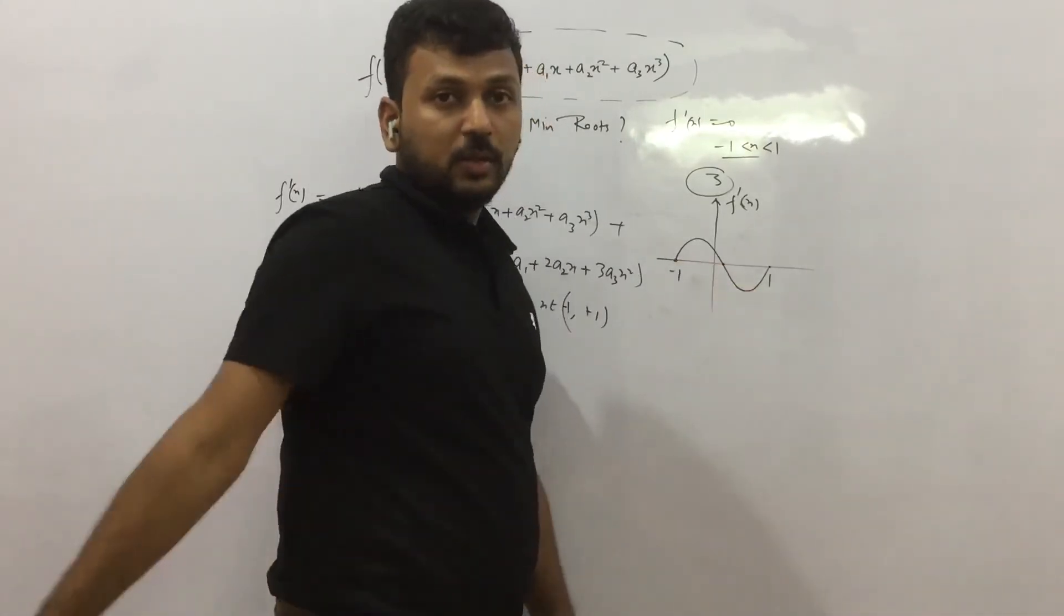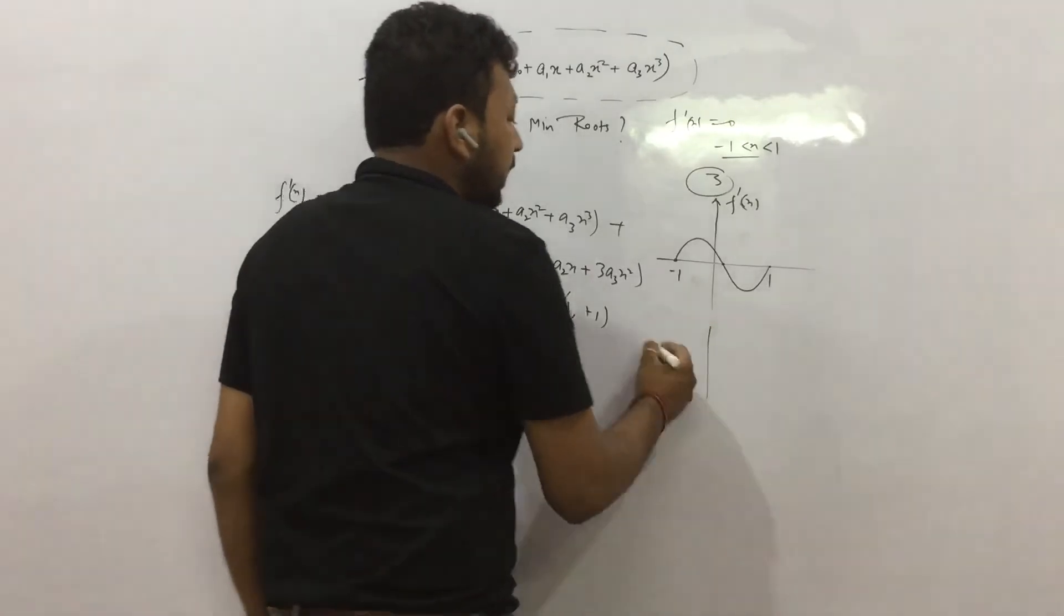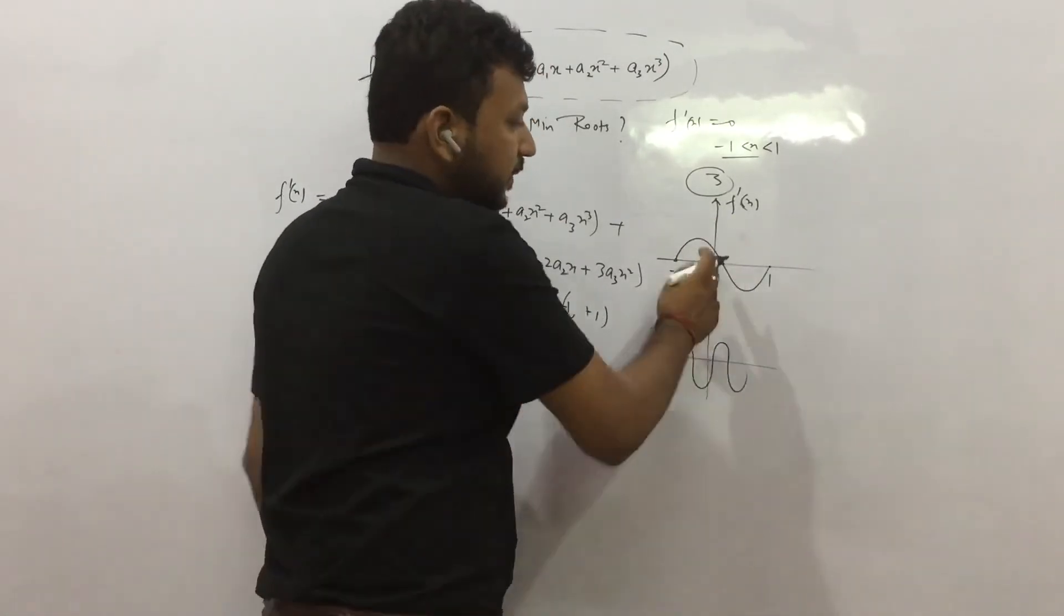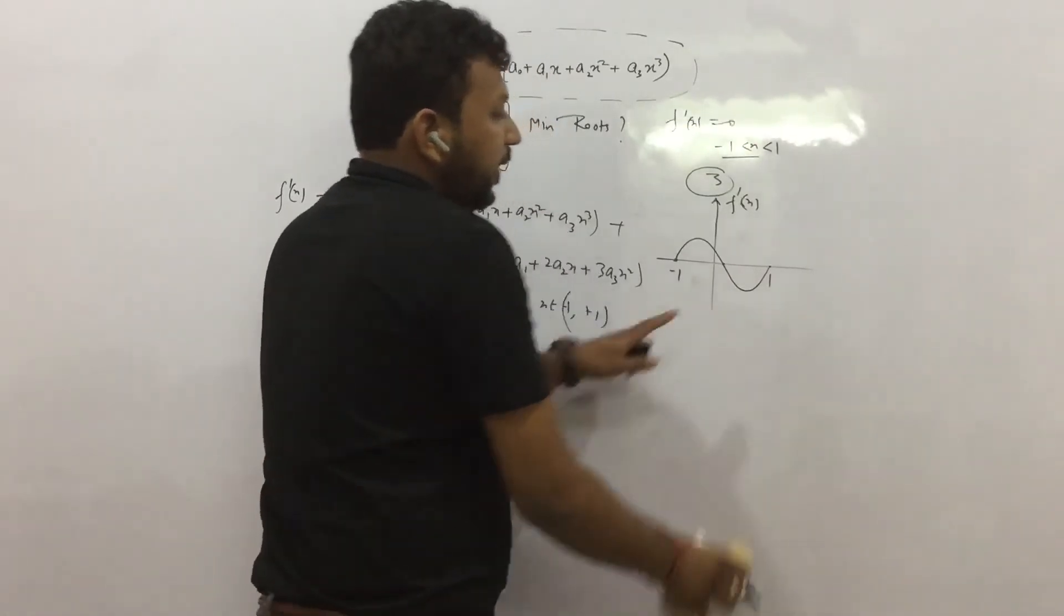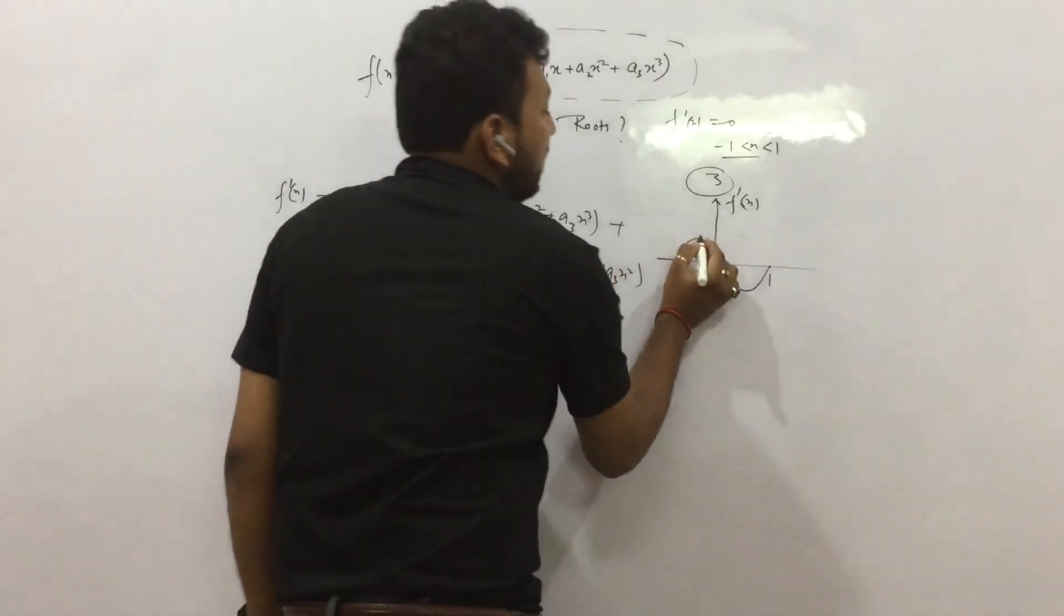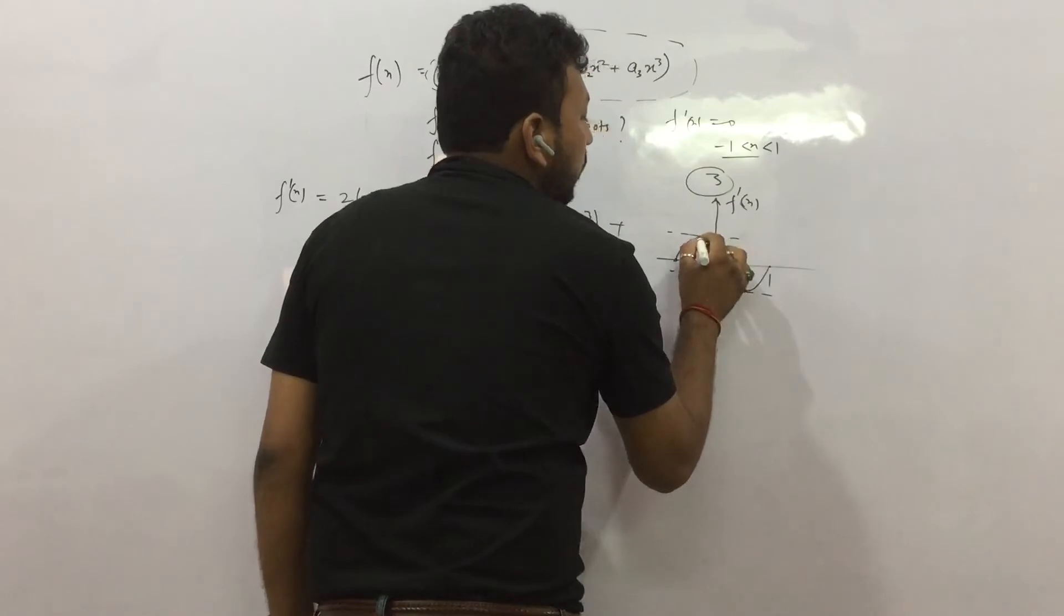So somewhere between it is also 0. So the graph might be like this, or maybe like this. That you do not know. But this is for sure: at one point it intersected the x-axis because it is 0 at one point in between. Now you can see the slope again. The slope again is getting 0 at 2 points.